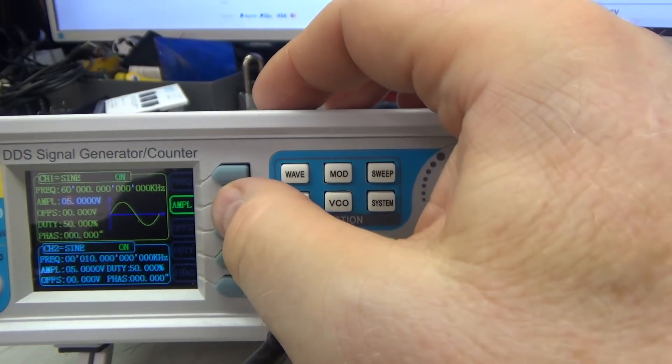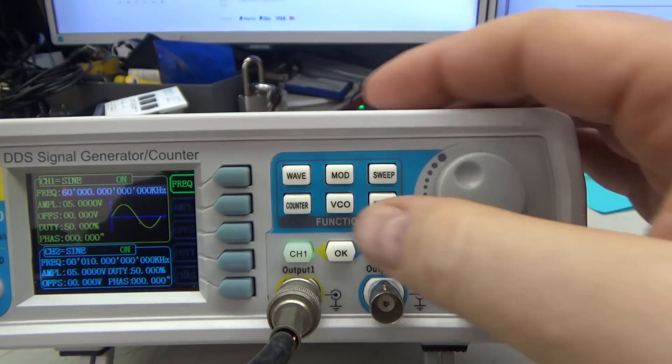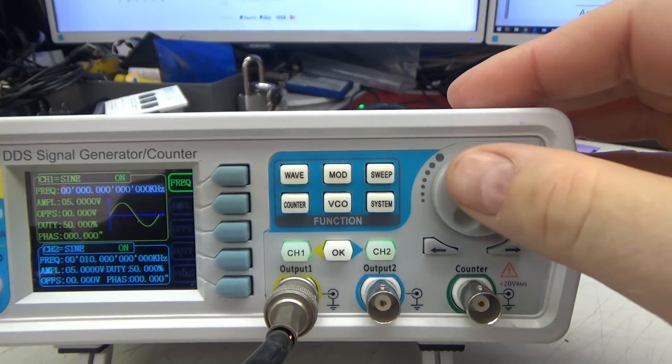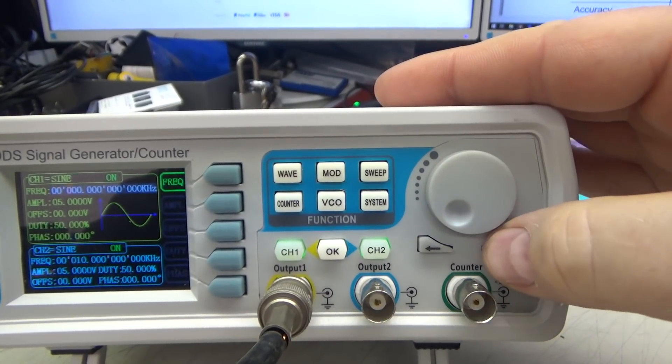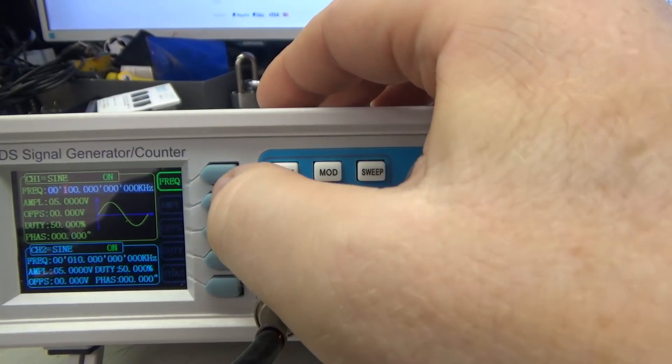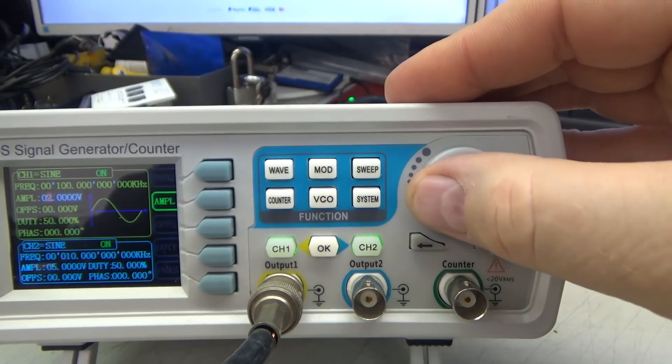Here is amplitude. Interestingly enough the amplitude is limited at 5 volts when you are at 60 megahertz but if I go back here and take it down to 100 kilohertz the amplitude will now go up to 20 volts which is interesting and really handy.